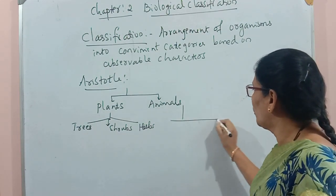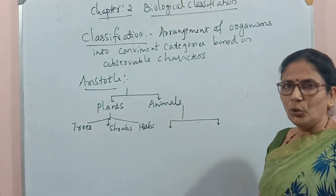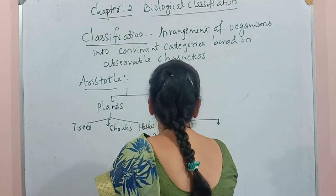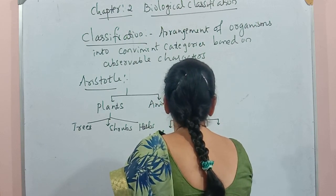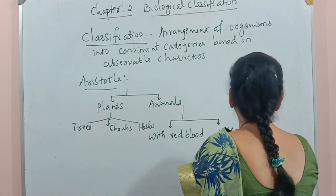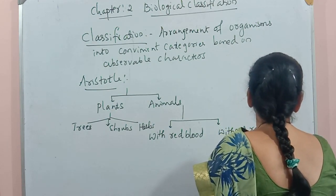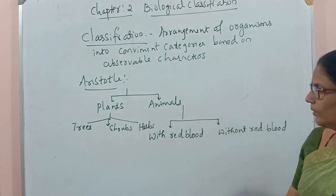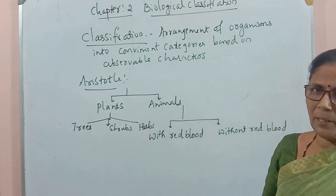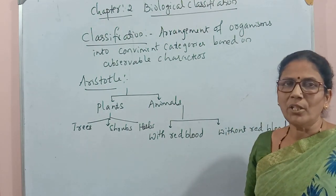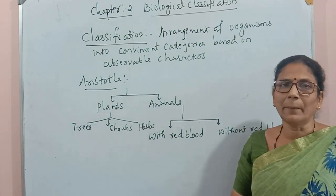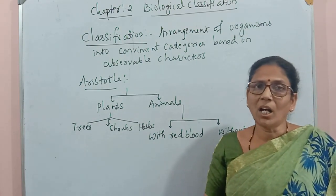In the same way, animals were also classified into two groups. One group is animals with red blood, and another group is animals without red blood. This was a very simple classification made by Aristotle.